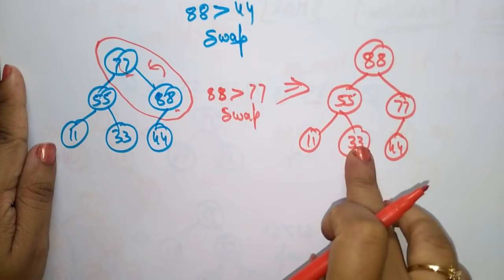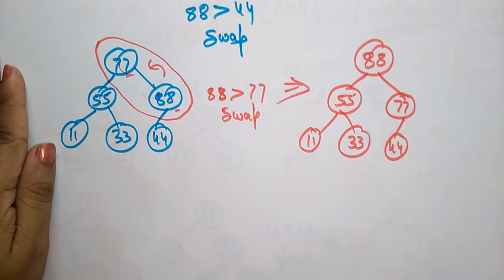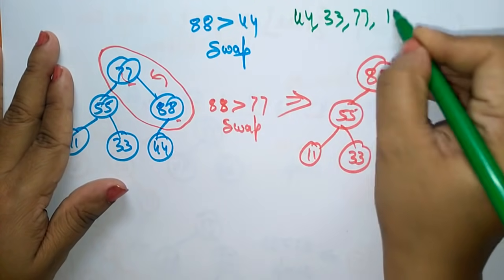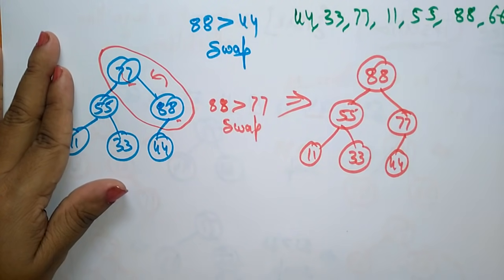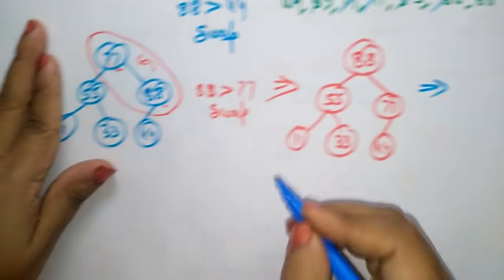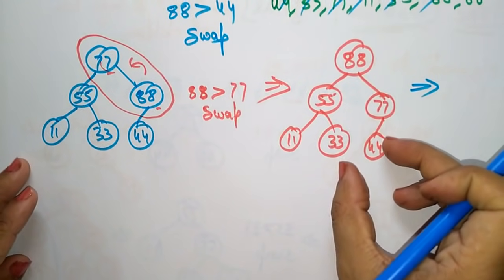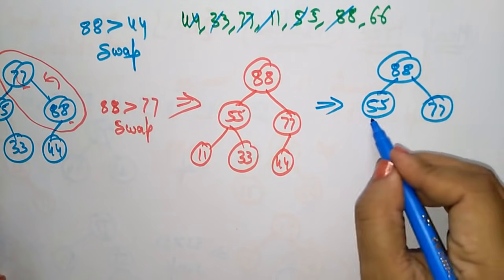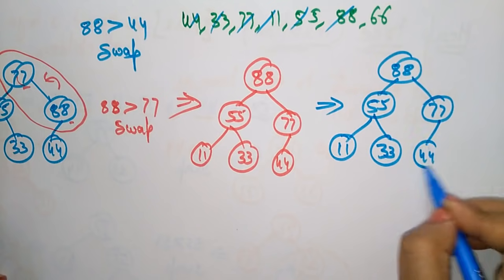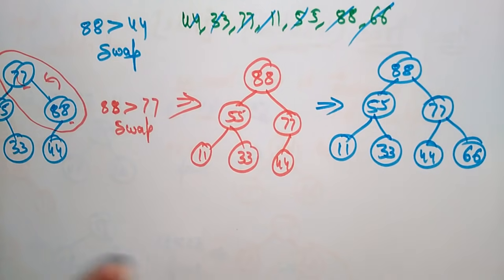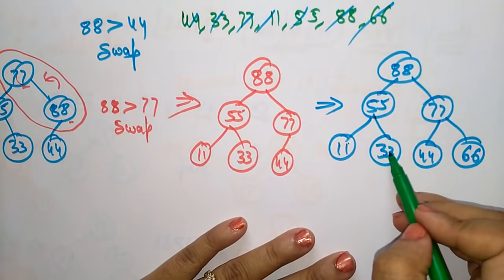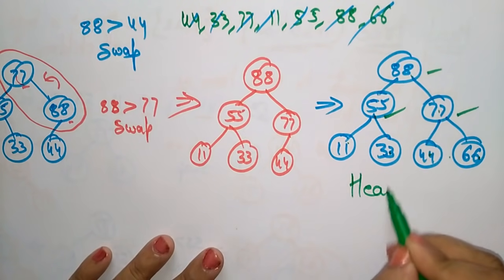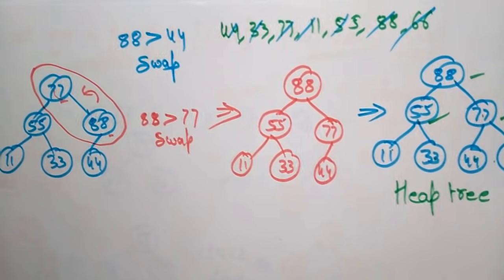Now insert the last element 66. To make the tree a complete binary tree, insert 66 as the right child of 77. The tree becomes 88, 55, 77, 11, 33, 44, 66. Now check: the parent 88 is greater than all children — okay. Parent 55 is greater than its children — okay. Parent 77 is greater than 66 — okay. So this is a heap tree which is also a complete binary tree.